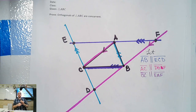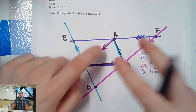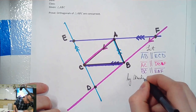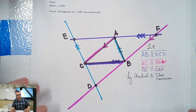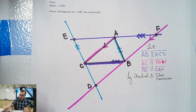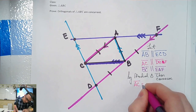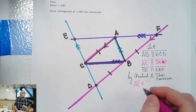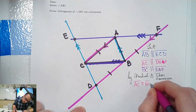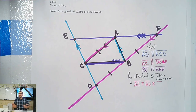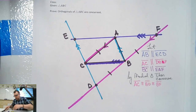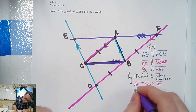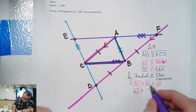Now we know by Medial Triangle Theorem converse — basically all these things are congruent. So by Medial Triangle Theorem converse: this and this will be congruent, all three of those. BC is congruent to EA and AF. AB is congruent to EC and CD. Now by definition that means C, A, and B are midpoints of the bigger triangle.